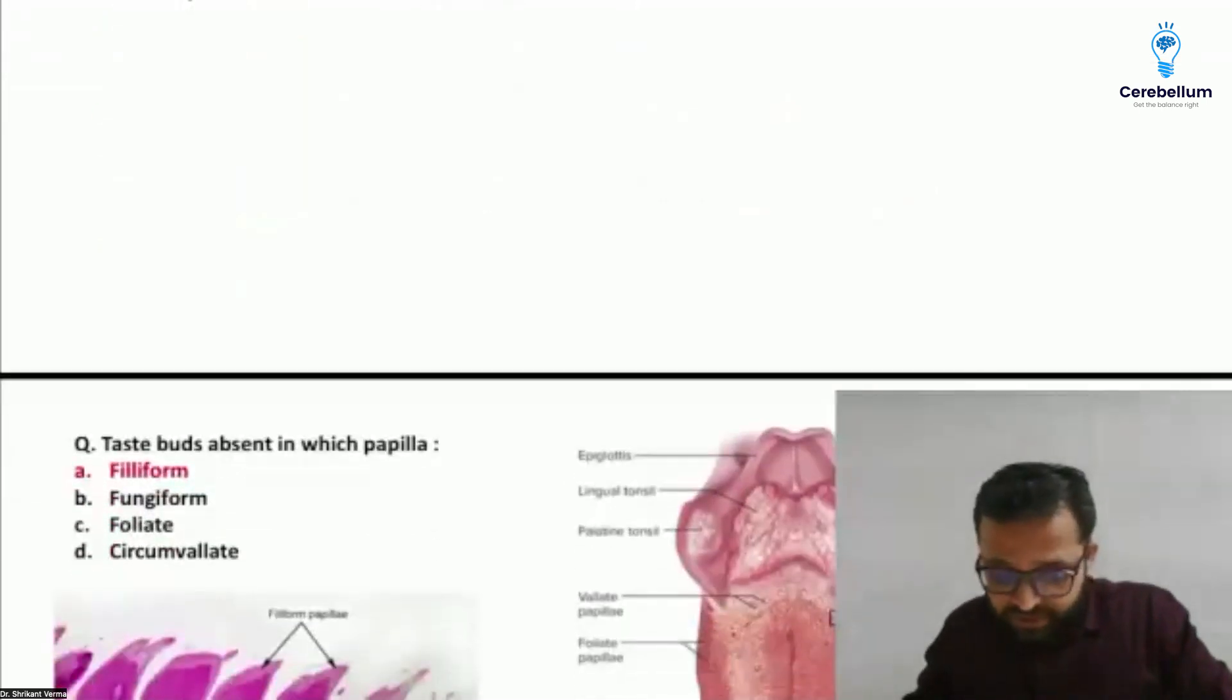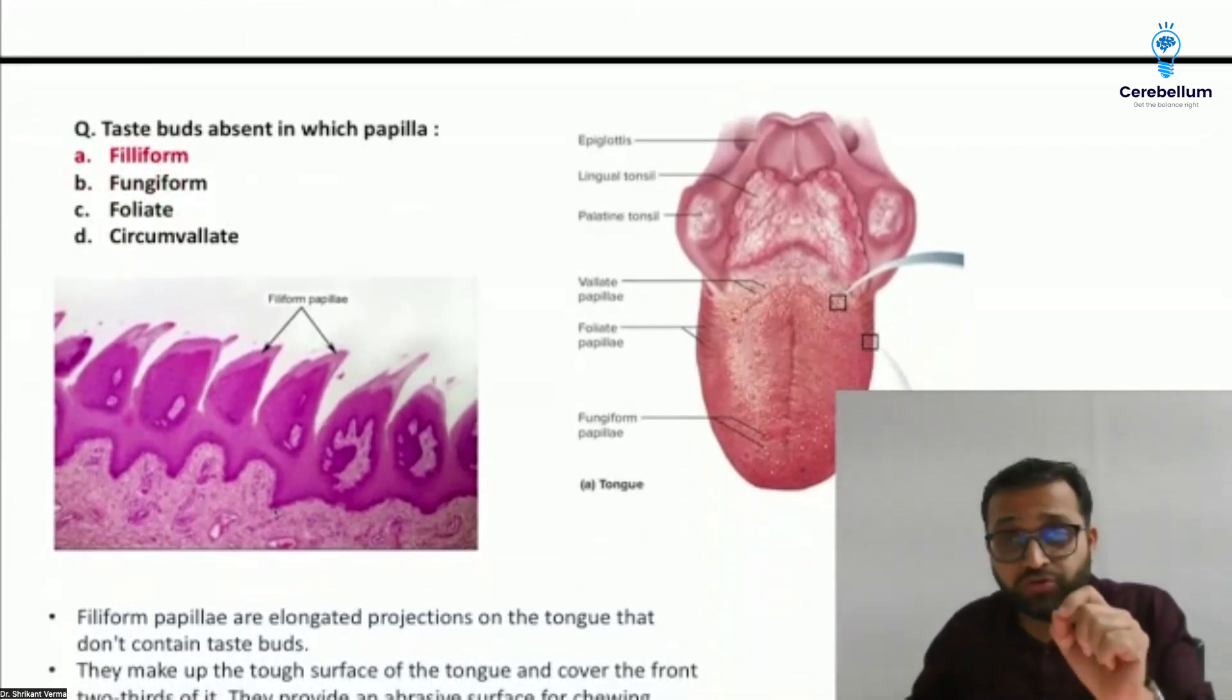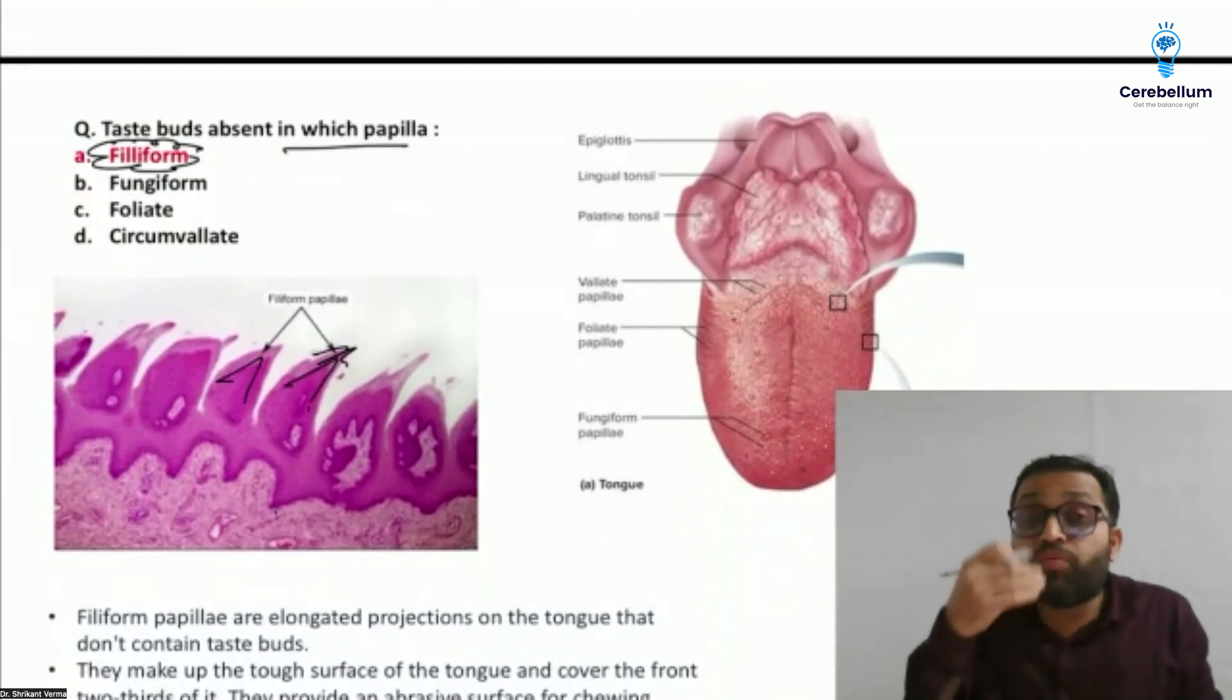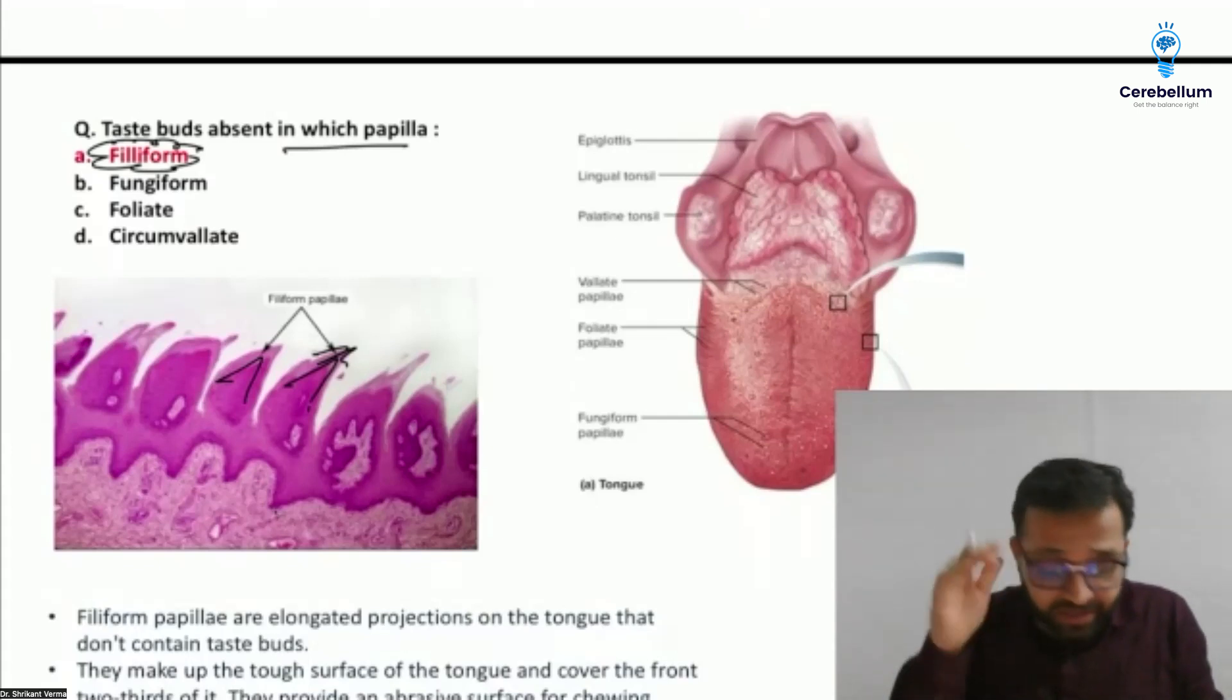Next question - I always told tongue is an important topic. This time they asked the tongue topic but a new type of question. The term taste bud absent in which papilla. The answer is filiform papilla. Remember, filiform papilla has layers of keratin and is generally more developed in dogs and cats so that they can make more friction on the surface. Filiform papilla is not having any kind of taste bud.